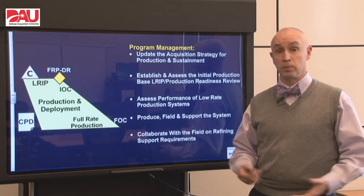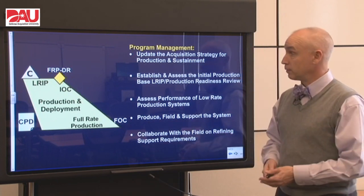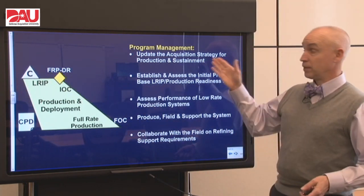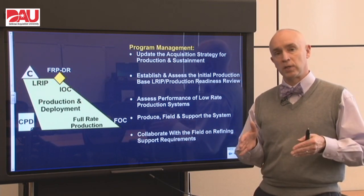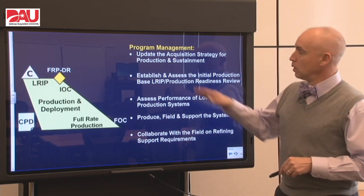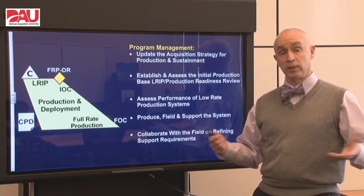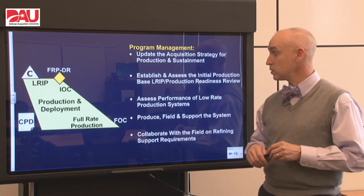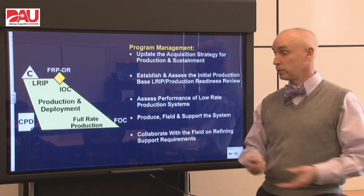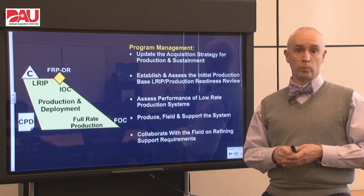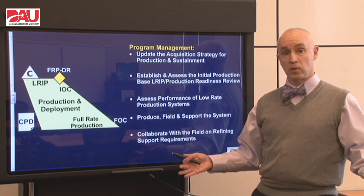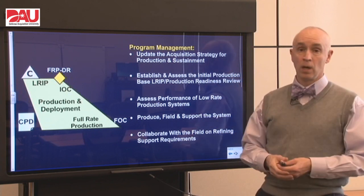The first functional area is program management — they're overseeing the overall effort. We've got to update that acquisition strategy because we've got another major decision point: the full rate production decision review. We need an updated plan focusing on full rate production, deployment, and sustaining the system. We want to establish the initial production base through low rate initial production, and assess the performance of those units in that initial operational test and evaluation — kind of that big final exam. The program management folks are going to be overseeing the whole process of producing, fielding, and supporting the system.